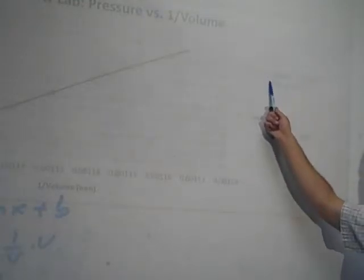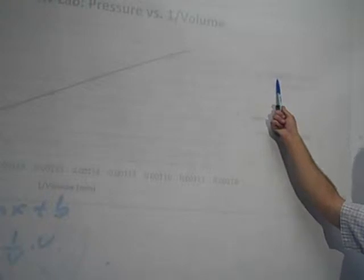And what did we say p times v is? It's a constant. So p times v is a constant. And slope represents p times v. So then what does that say about the value of k? It's equal to your slope.